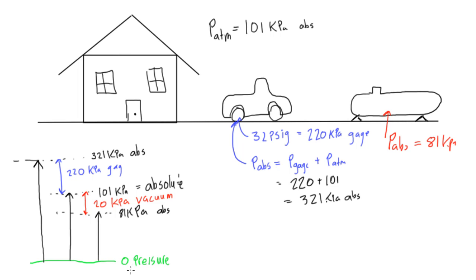Anyways, so yeah, there we go. So we have zero pressure, the absolute pressure is just how much more than a perfect vacuum we have. And then gauge pressure is how much more than the absolute we have, and vacuum pressure is how much less than the absolute pressure we have.